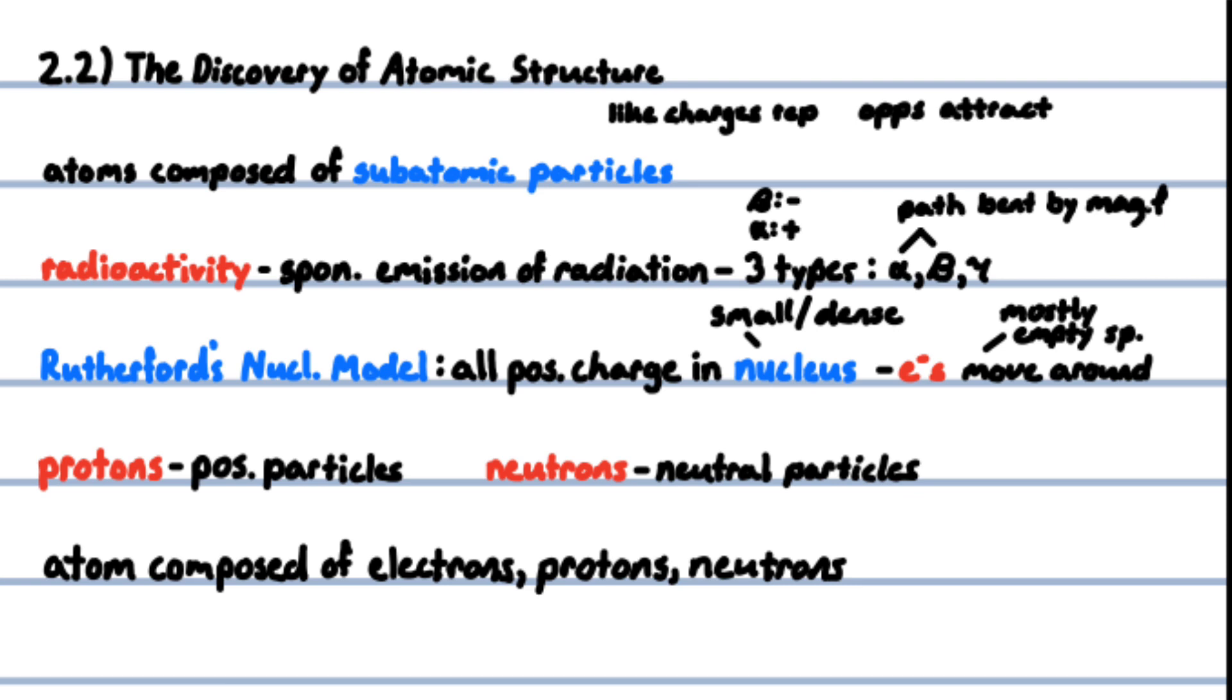The discovery of atomic structure revealed that the atom is composed of subatomic particles. Particles with the same charge repel one another, whereas particles with unlike charges attract one another. Radioactivity is the spontaneous emission of radiation. Three types of radioactivity—alpha, beta, and gamma—have different behaviors. The paths of alpha and beta radiation are bent by an electric field in opposite directions, while gamma radiation is unaffected. Beta particles are high-speed electrons attracted to positively charged plates, meaning they are negatively charged.